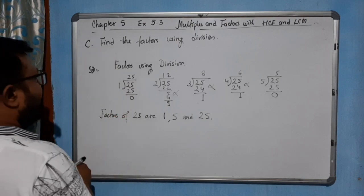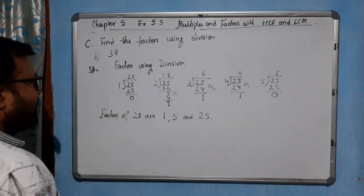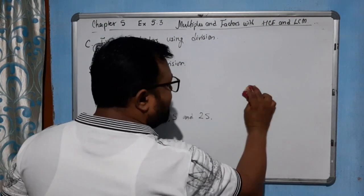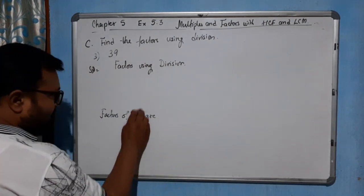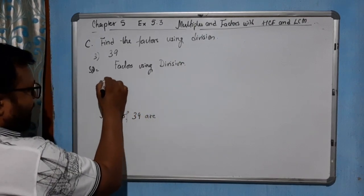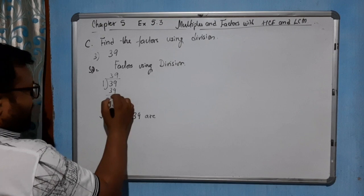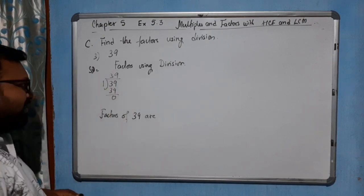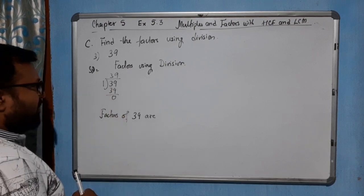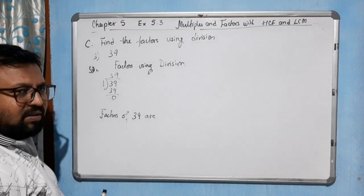Now come to the next one — 39. Let's try finding factors of 39. By 1, simply 1 times 39 is 39, remainder 0. We know that 1 is a factor of any number, and the number itself is always a factor.